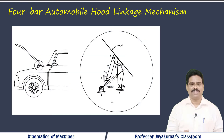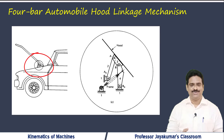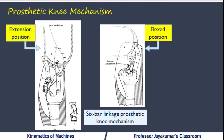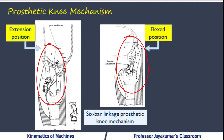You might have seen in your car we have a hood, and this can stand using a four-bar mechanism. So mechanisms are used in every part of our life, in every walk of our life. Mechanisms are used for medical applications as well. As you could see here, the prosthetic knee mechanism uses a six-bar linkage mechanism. The left-hand diagram shows the mechanism in the extension position. The right-hand side diagram shows the mechanism in the flexed position. The design of all such mechanisms requires the concepts of kinematics of machines.